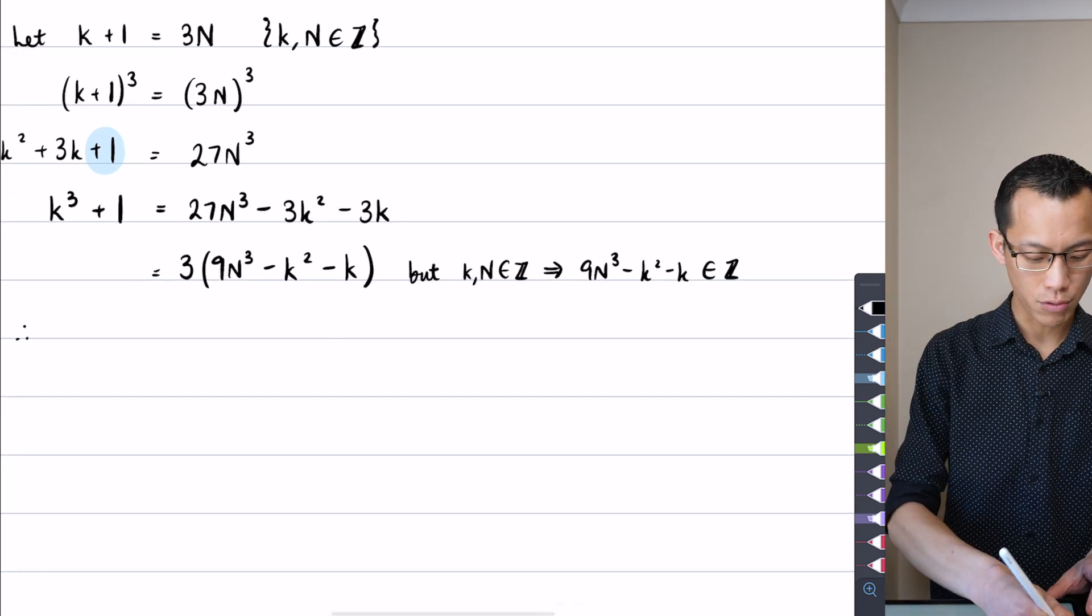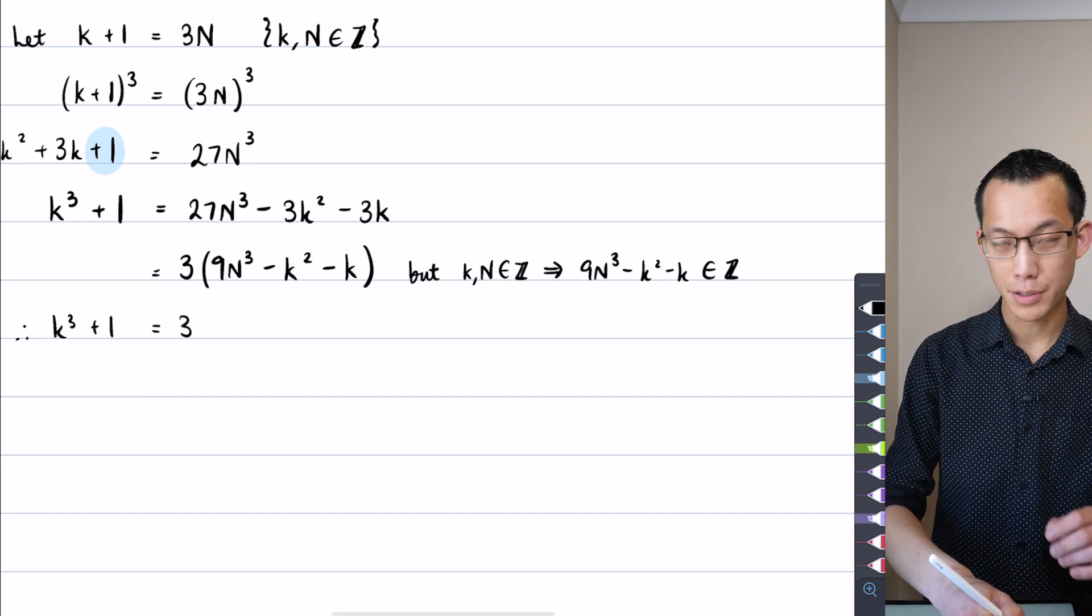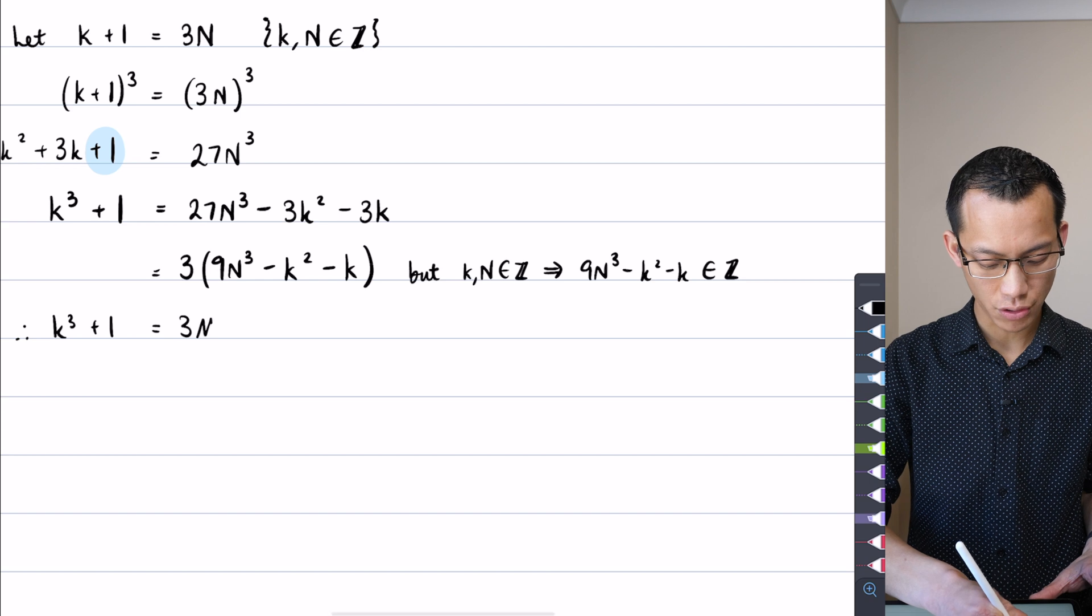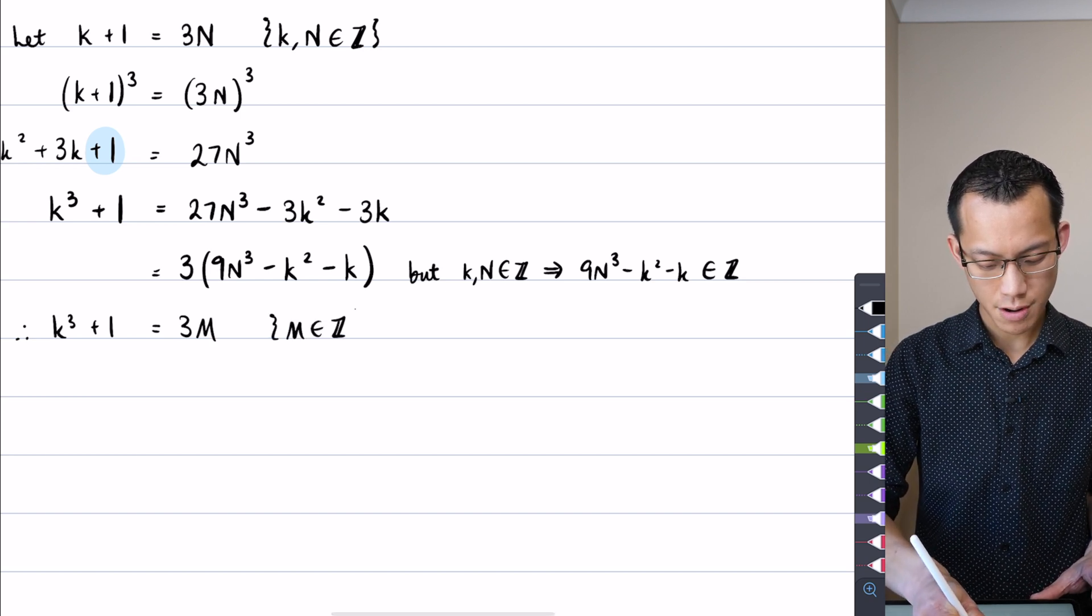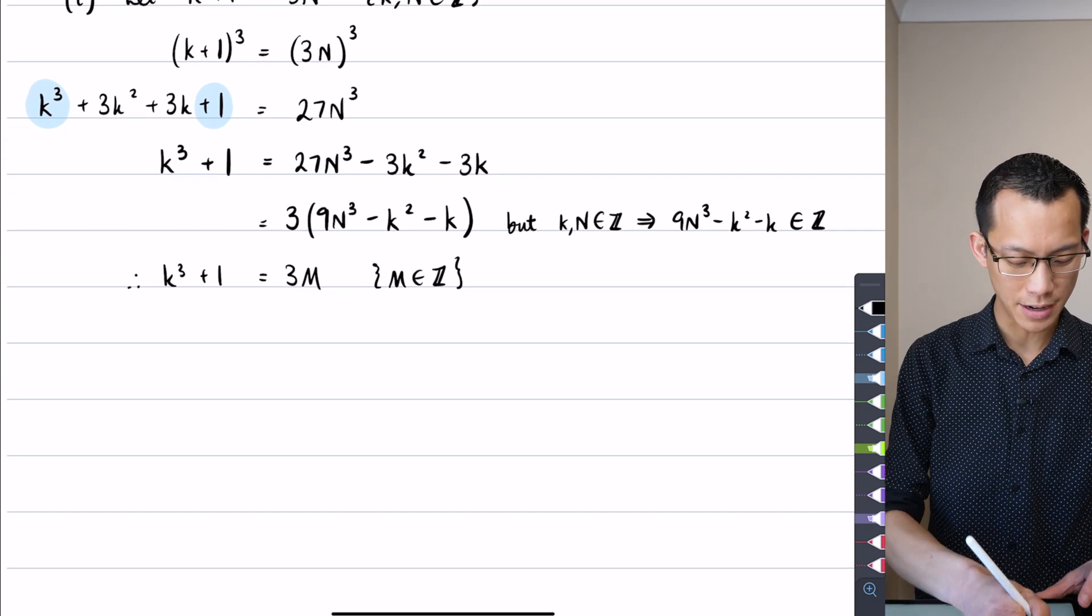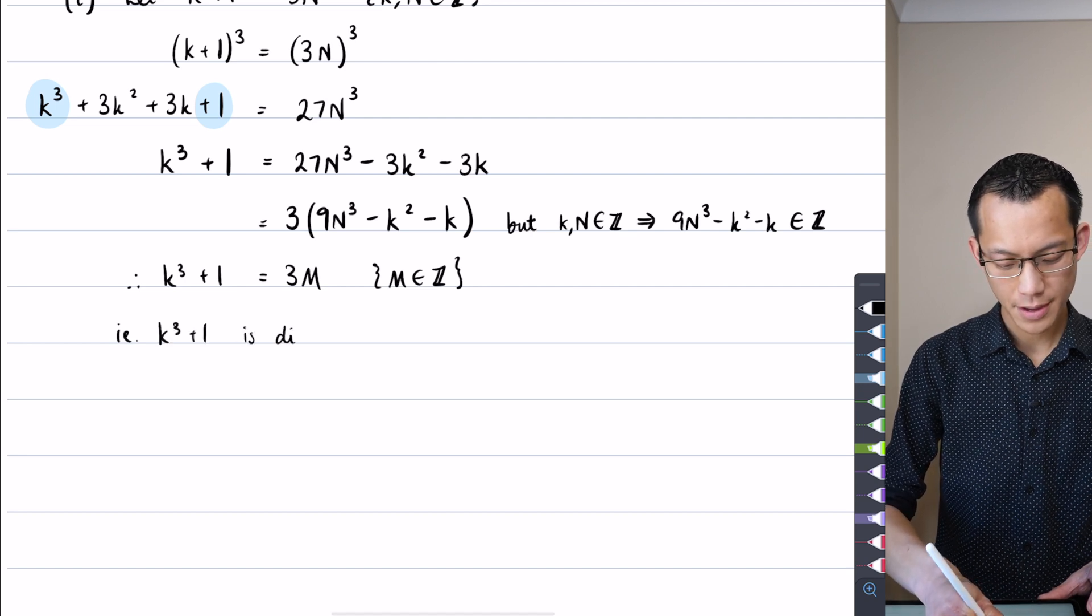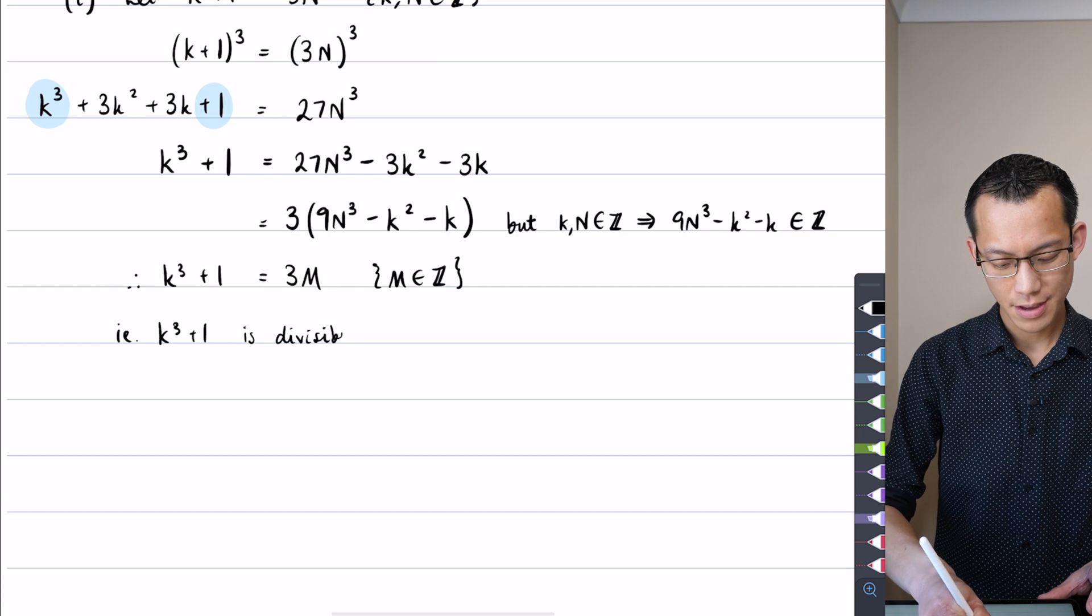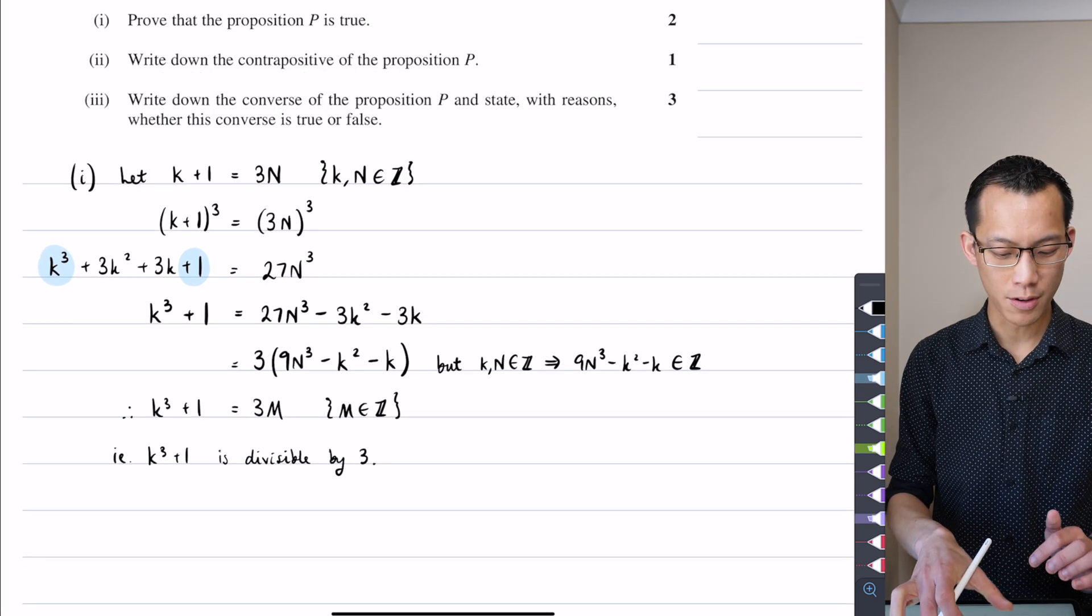So therefore, I can say, therefore, k cubed plus 1, that's going to be 3 times some other integer. I'm just going to call it m. And at this point, logic wise, I'm finished. I should just tie this up in a neat bow. In other words, k cubed plus 1 is divisible by 3. So I'll put a full stop on that and I feel happy about part 1.